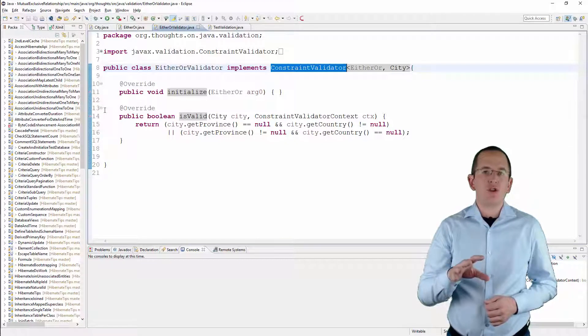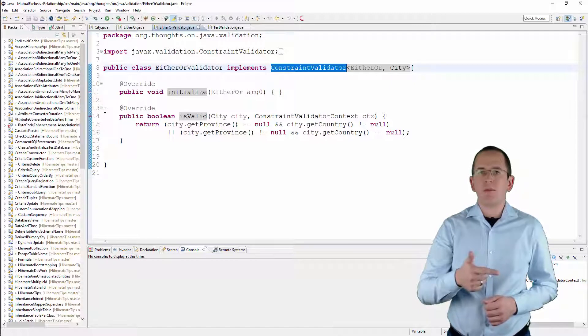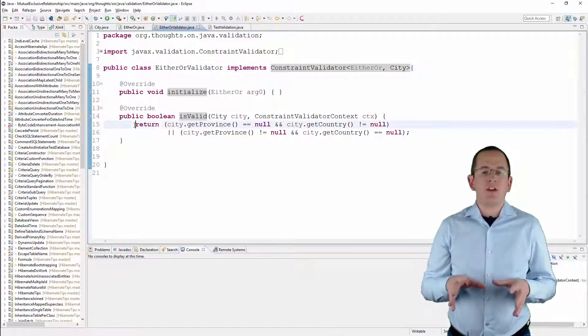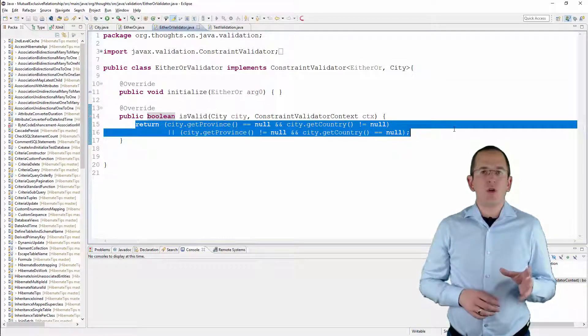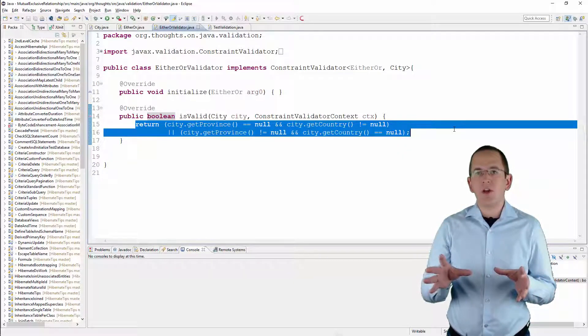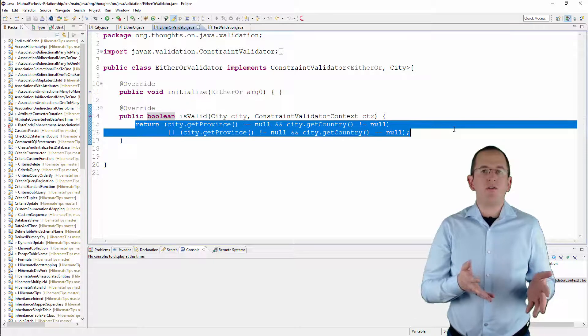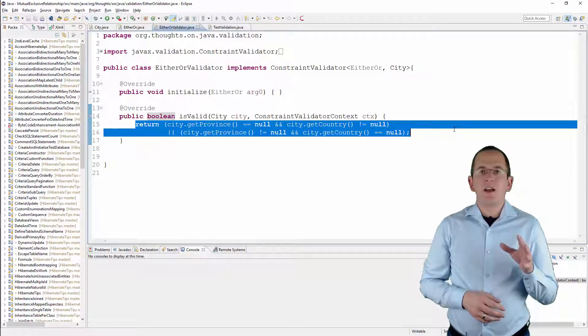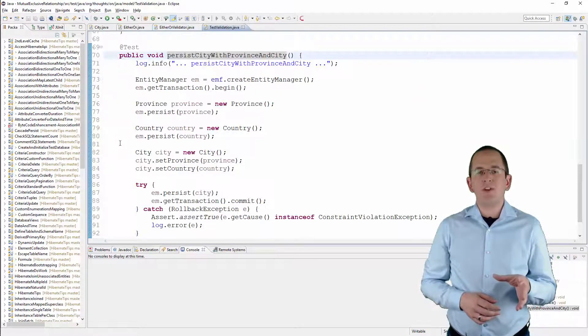In this example, I want to ensure that a city is either associated with a province or a country. So, that's what I check in the isValid method. It returns true if either the getProvince or the getCountry method return null and the other method returns a value that's not null. That's all you need to do to implement the validation.